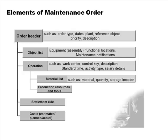Here you see the elements of the maintenance order. It has an order header, an object list which contains all the objects for which you may be providing maintenance, and several operations — just like any other order. You keep track of all operations to be performed, with information about work centers and control keys, just like a production order. It also has a list of materials needed, production resources and tools, a settlement rule, and infrastructure for tracking cost.